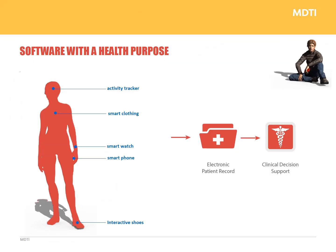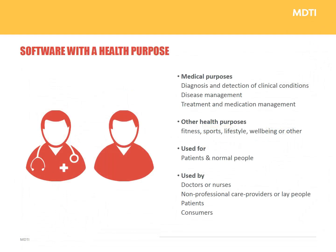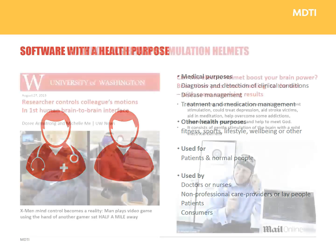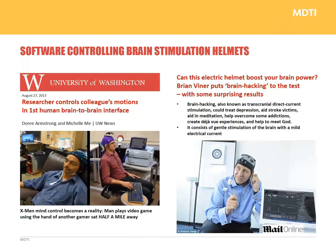You now want to make it available free of charge through your website or through an app store. This training contains information that will interest all of you. You will learn about the laws and regulations that apply to your health software and what it takes to make it available on the market and to keep it on the market. Even if you work for the gaming industry, you might find this interesting — if you intend to create a video or virtual reality game that uses brainwave sensing headsets with magnetic pulse generators for mind control in cooperative gameplay, then you may be affected by laws you didn't even realize could apply to you.